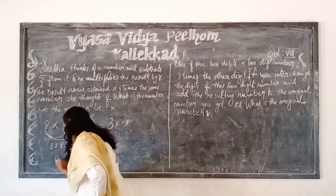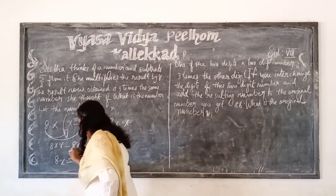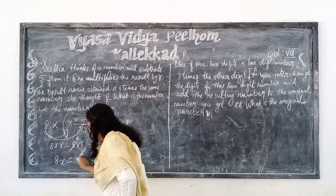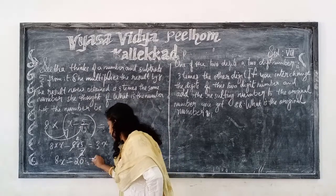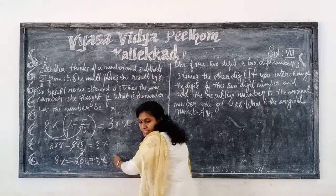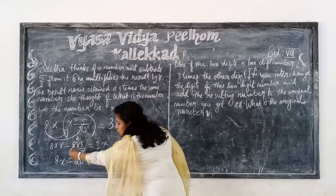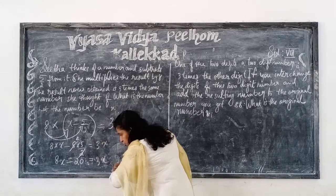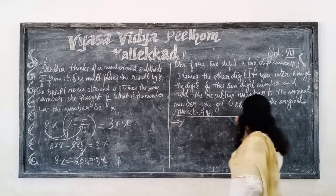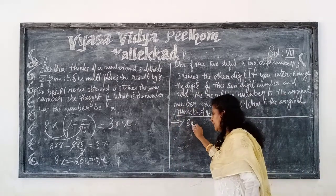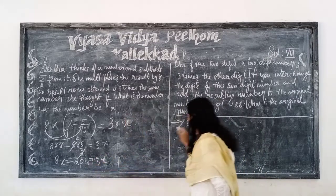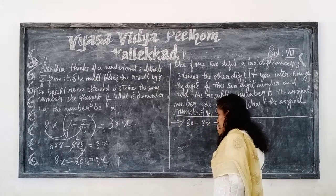So we get here 8x minus — cutting 8 by 2 gives 4, and 4 times 5 gives 20. So 8x minus 20 equals 3x. The x term is on both sides, so we bring 3x to the left side and minus 20 to the right side. This implies 8x minus 3x equals 20.